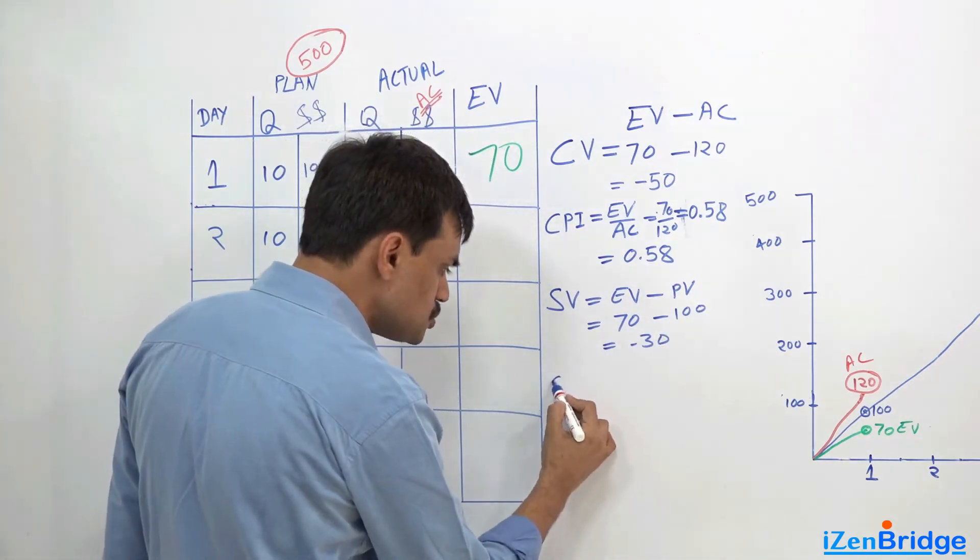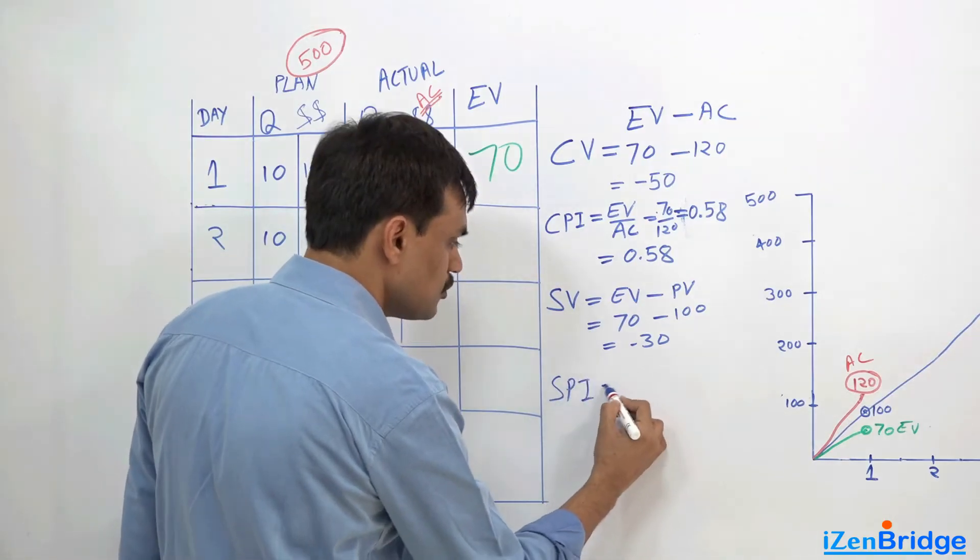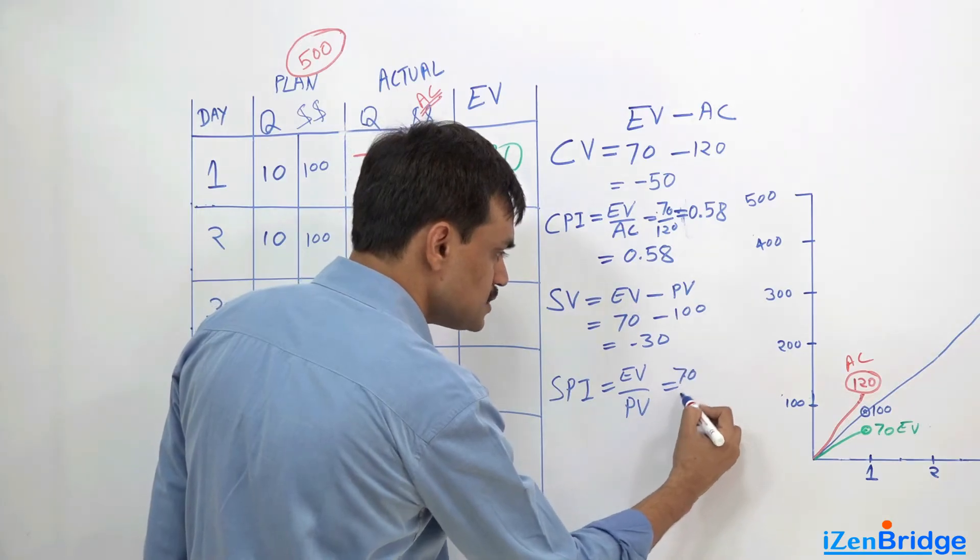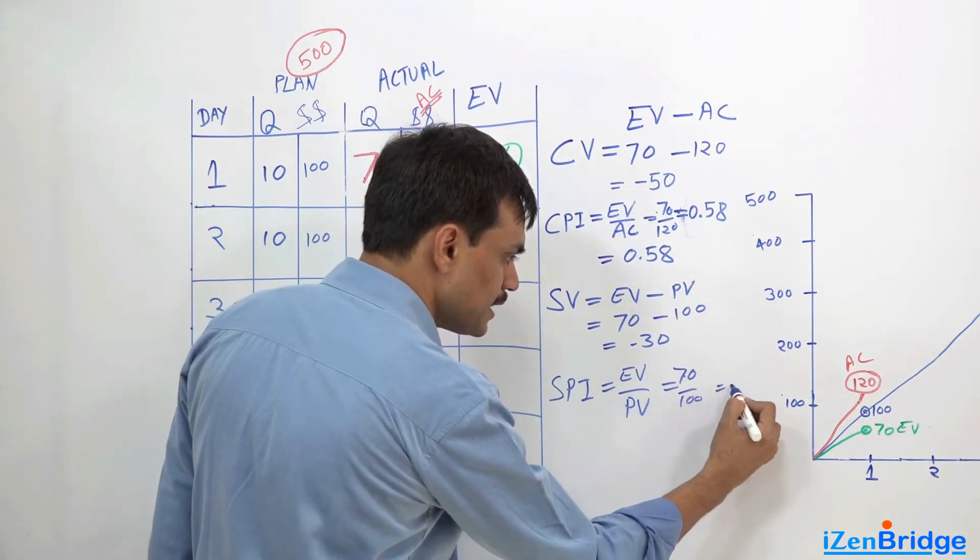Similarly, we have a schedule performance index, which is like earned value divided by planned value. In this case, 70 divided by 100, it is like 0.7.